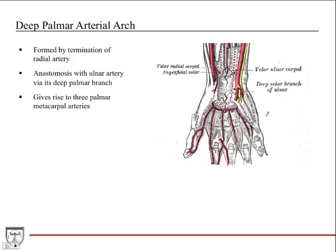The deep palmar arterial arch is formed by the termination of the radial artery, anastomosing with the ulnar artery via that deep branch, which dives down deep to complete the arch. The deep palmar arterial arch gives rise to three palmar metacarpal arteries, shown right here as one, two, and three. We'll talk about these specific arteries to the fingers in a little more detail.